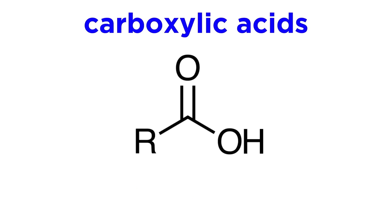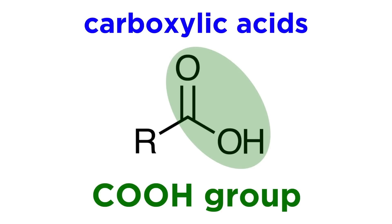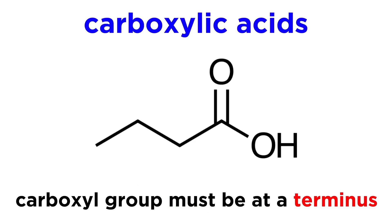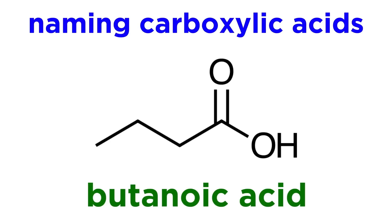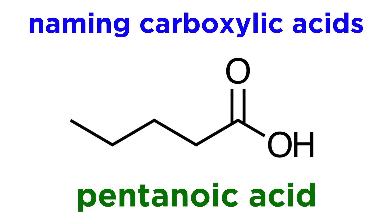Next, let's take a look at the carboxylic acid. These have a COOH group, which is a hydroxyl adjacent to a carbonyl. These are similar to aldehydes in the sense that they must occur at the terminus, or end, of a carbon chain. These will use the suffix -oic acid. So this is butanoic acid. This is pentanoic acid.